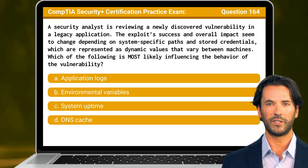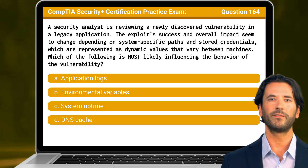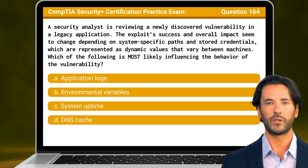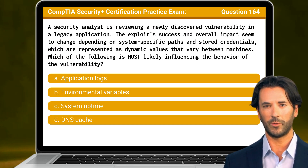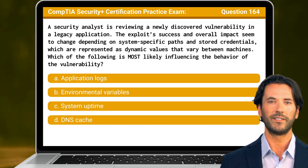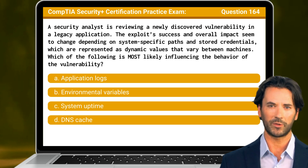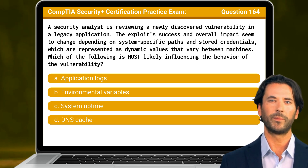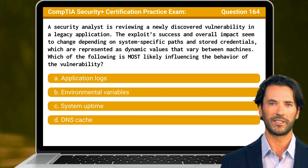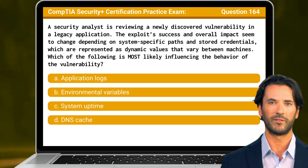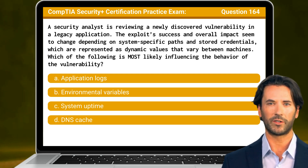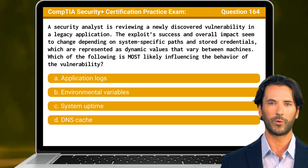Question 164. A security analyst is reviewing a newly discovered vulnerability in a legacy application. The exploit's success and overall impact seem to change depending on system-specific paths and stored credentials, which are represented as dynamic values that vary between machines. Which of the following is most likely influencing the behavior of the vulnerability?